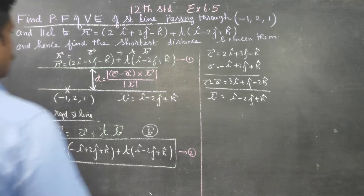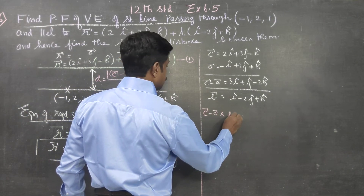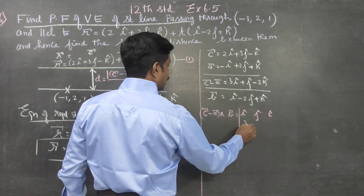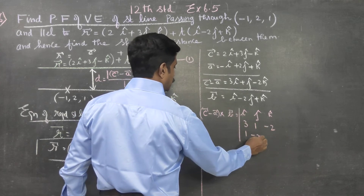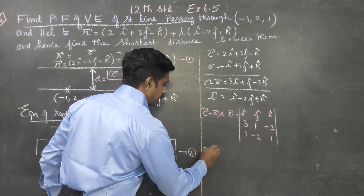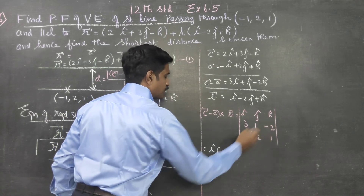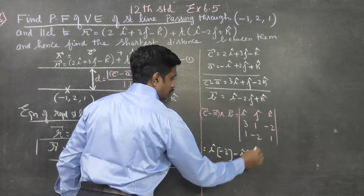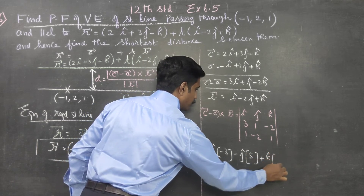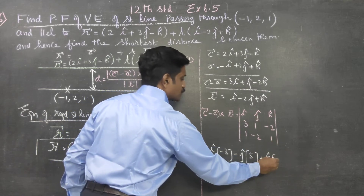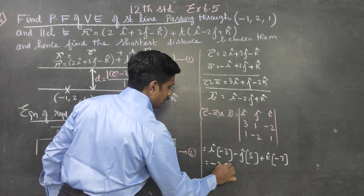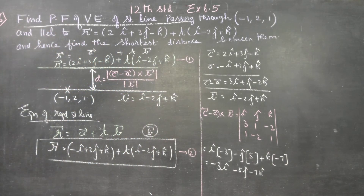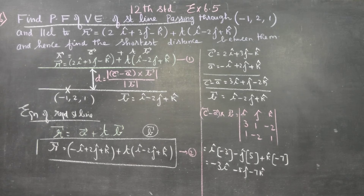Cross product c minus a cross b, using determinant with i, j, k: c minus a is (3, 1, -2) and b is (1, -2, 1). Expanding: i(1 minus 4) = minus 3, minus j(3 plus 2) = minus 5, plus k(minus 6 minus 1) = minus 7. Therefore c minus a cross b equals minus 3i minus 5j minus 7k.